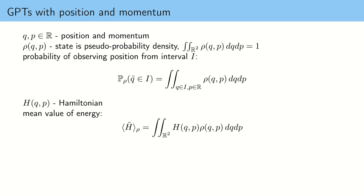Although I said that we postulate these things, they are not unfounded — we can find this in quantum theory. One can reformulate quantum theory using the so-called Wigner functions, and these Wigner functions satisfy all of these postulates. In fact, we compute the mean values by integrating Hamiltonian functions against the Wigner function.